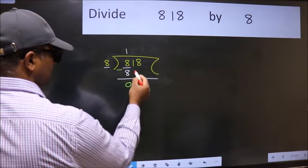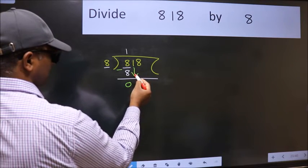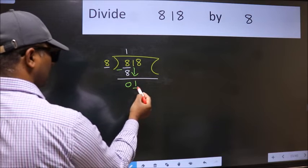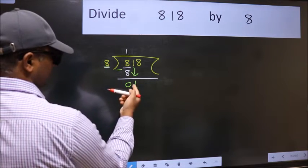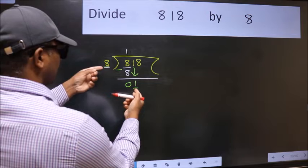After this, bring down the beside number. So, 1 down. Now, here we have 1 and here 8. 1 is smaller than 8.